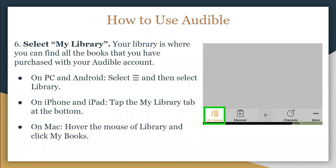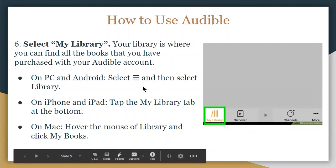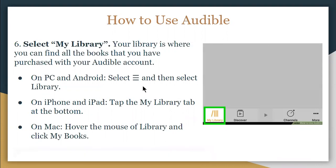Your library is where you can find all the books you have purchased with your Audible account. On PC and Android, select or tap the Three Horizontal Lines button and then select Library. On iPhone or iPad, tap the My Library tab at the bottom. On Mac, hover the mouse over Library and click My Books.